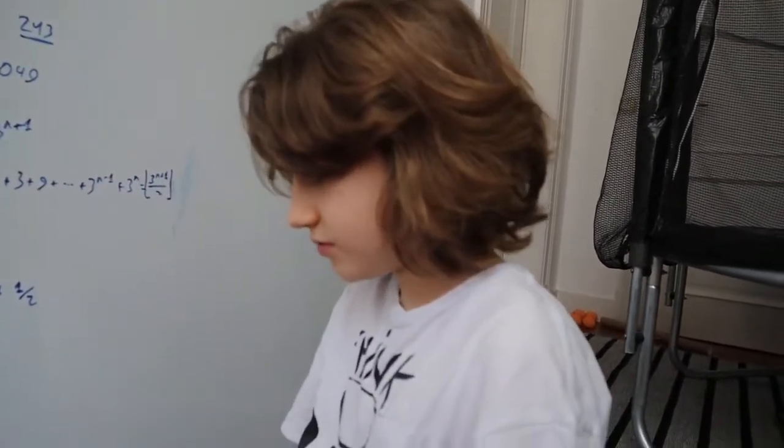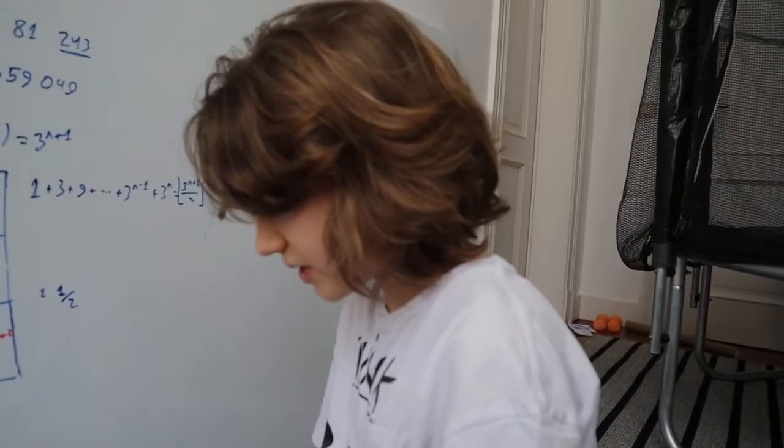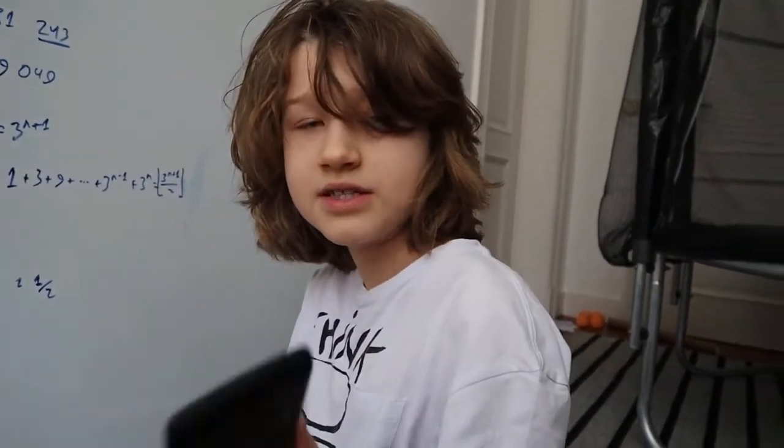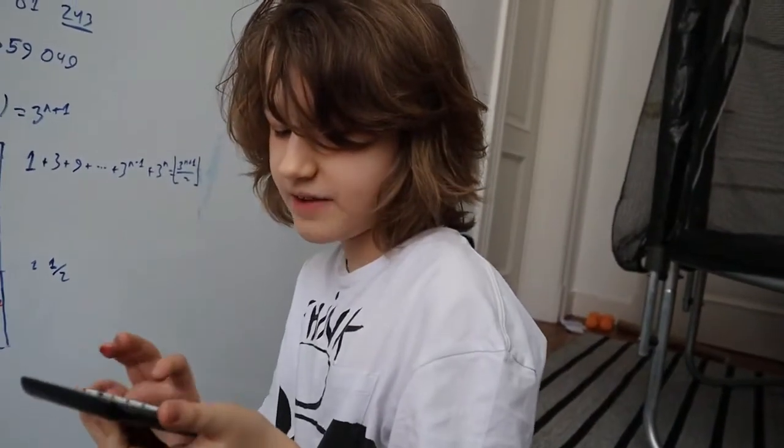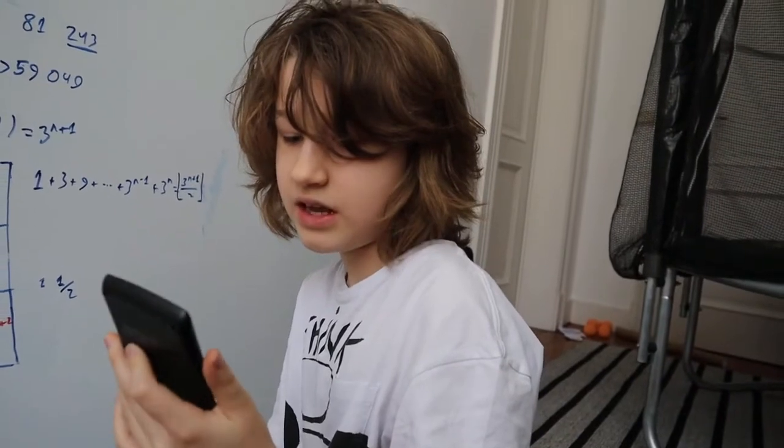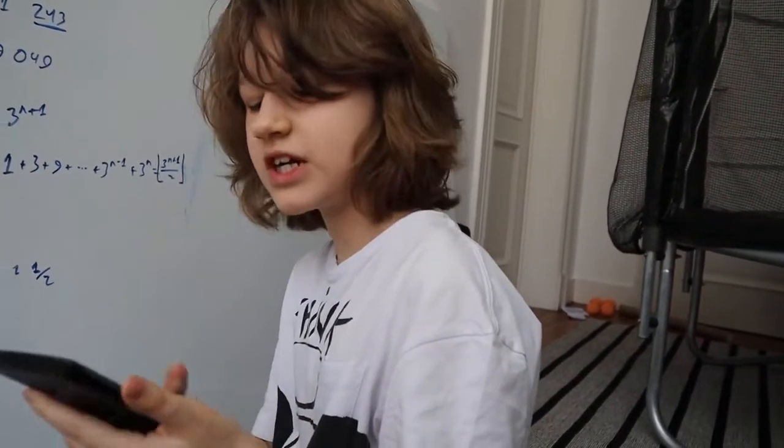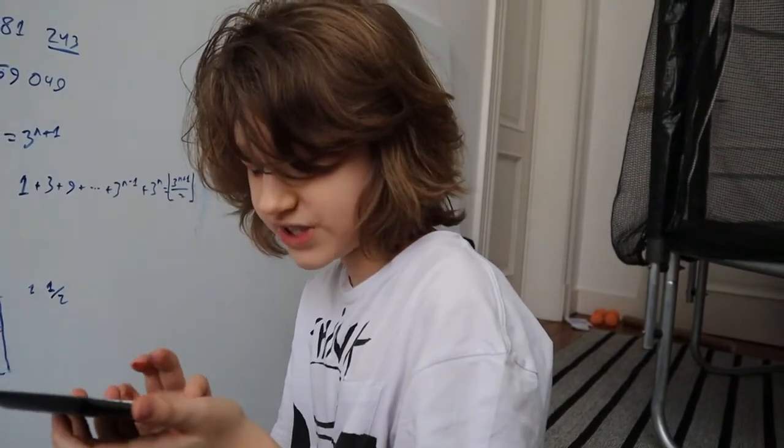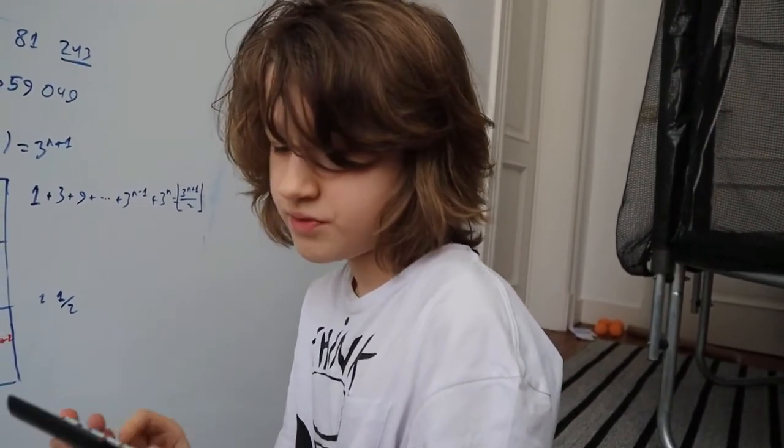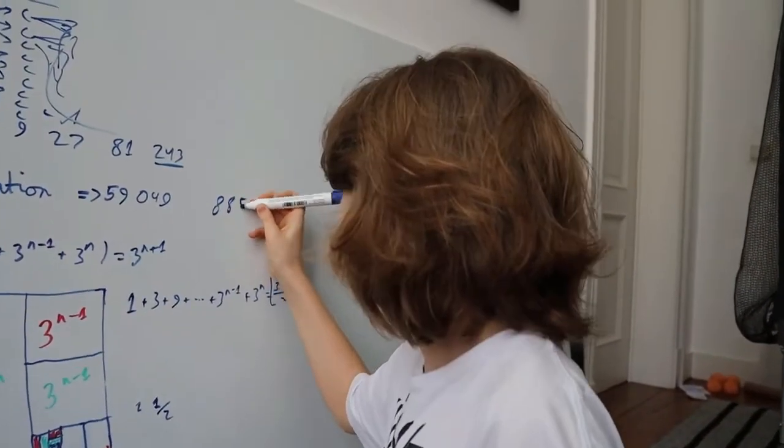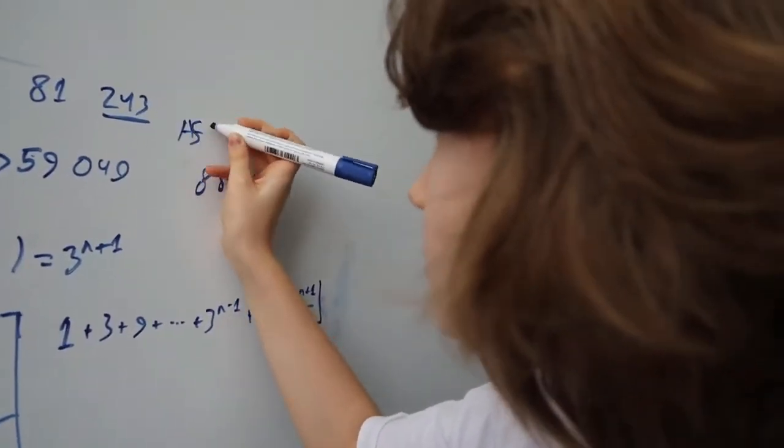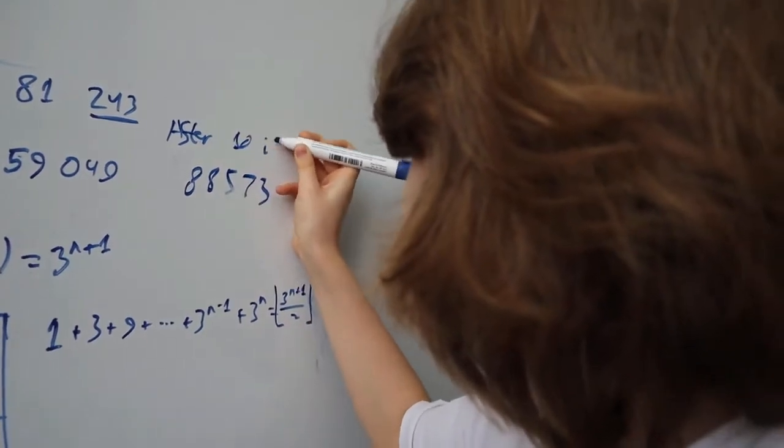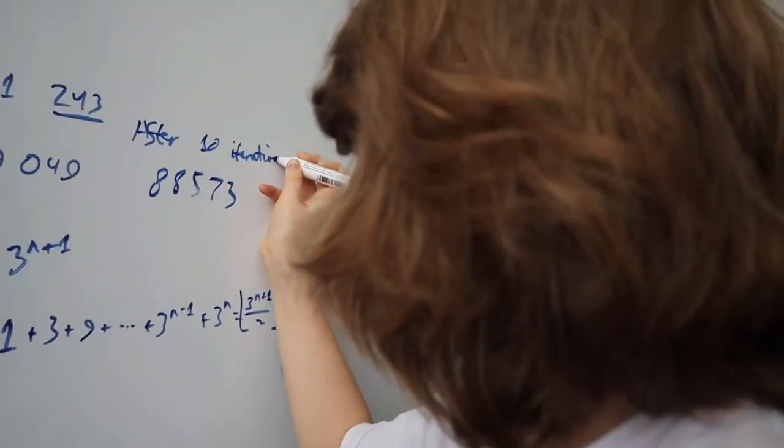Let's do it for n equals 10. Let's calculate this. 3 to the power of 11 is equal to 177,147. I'm going to halve it: 88,573.5. If we subtract a half, we can just round it down to 88,573.